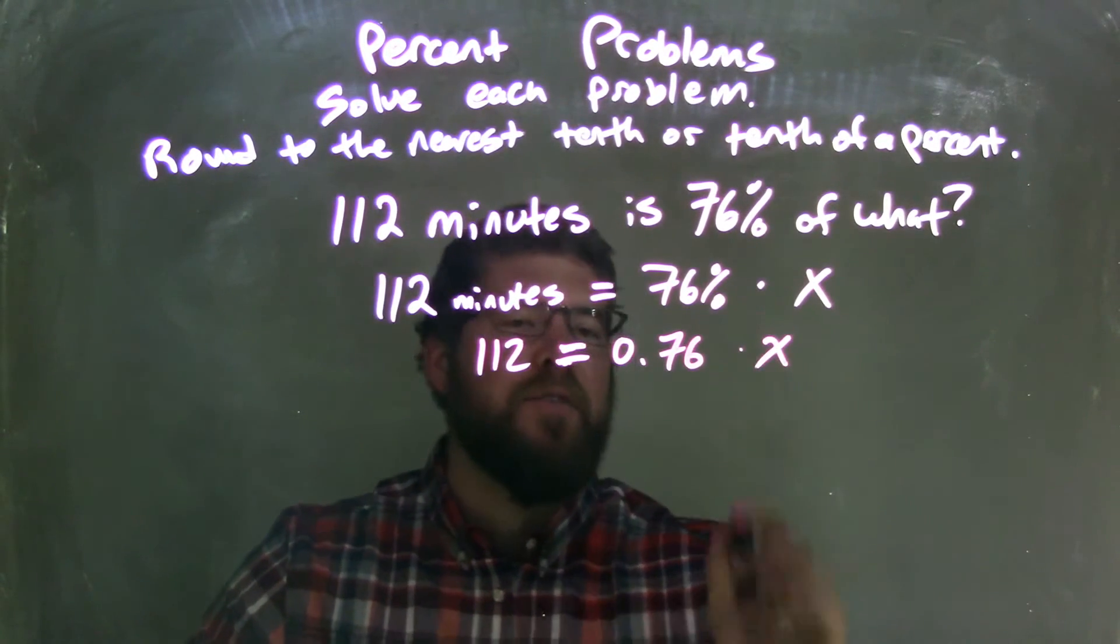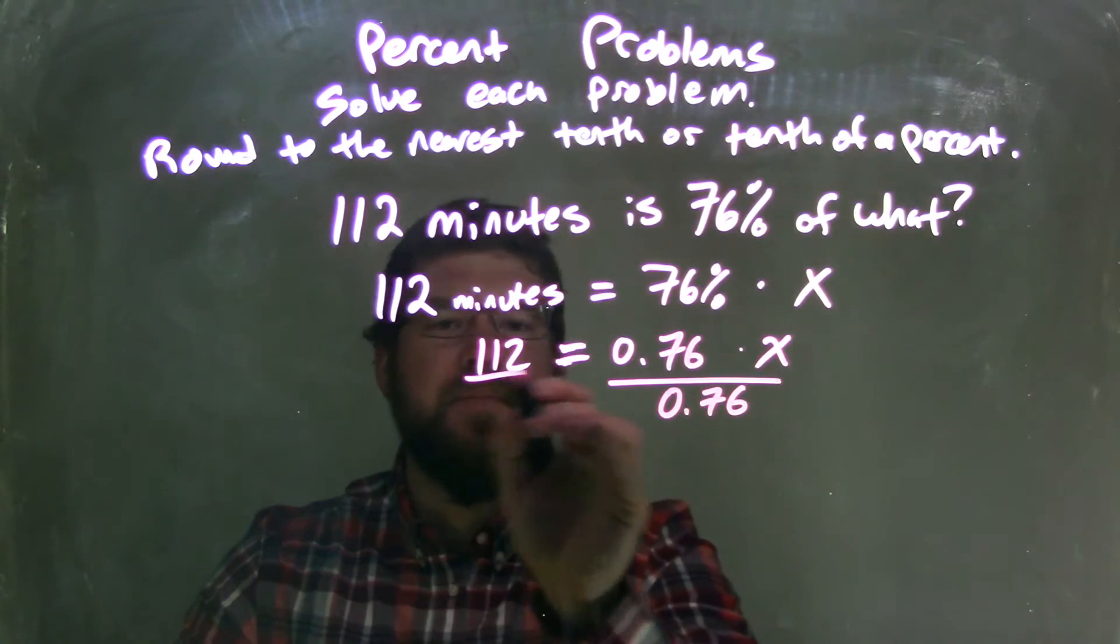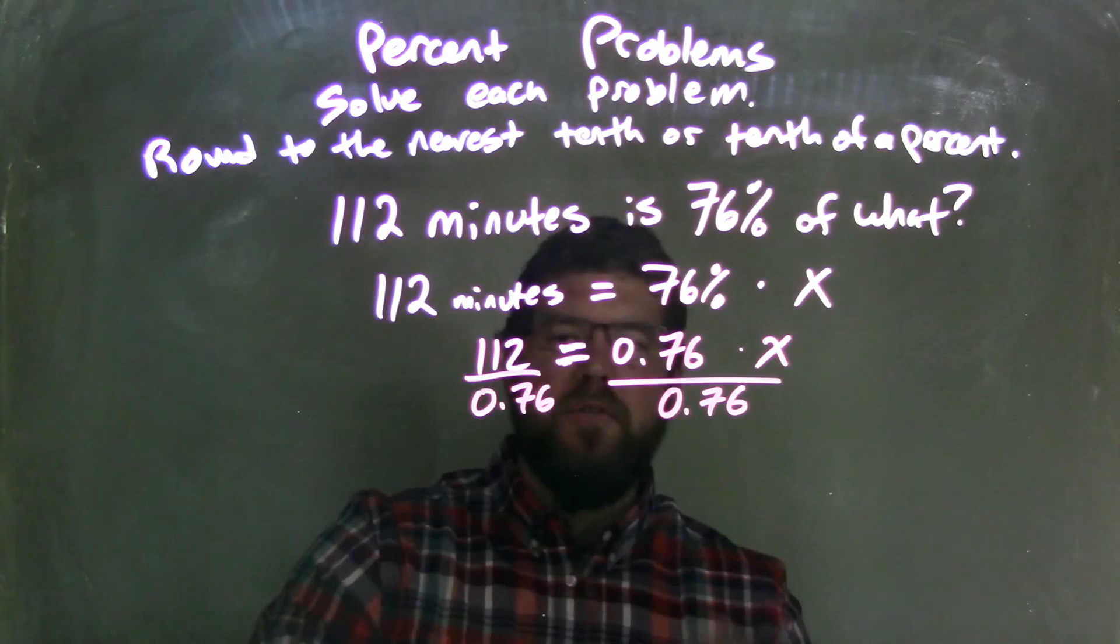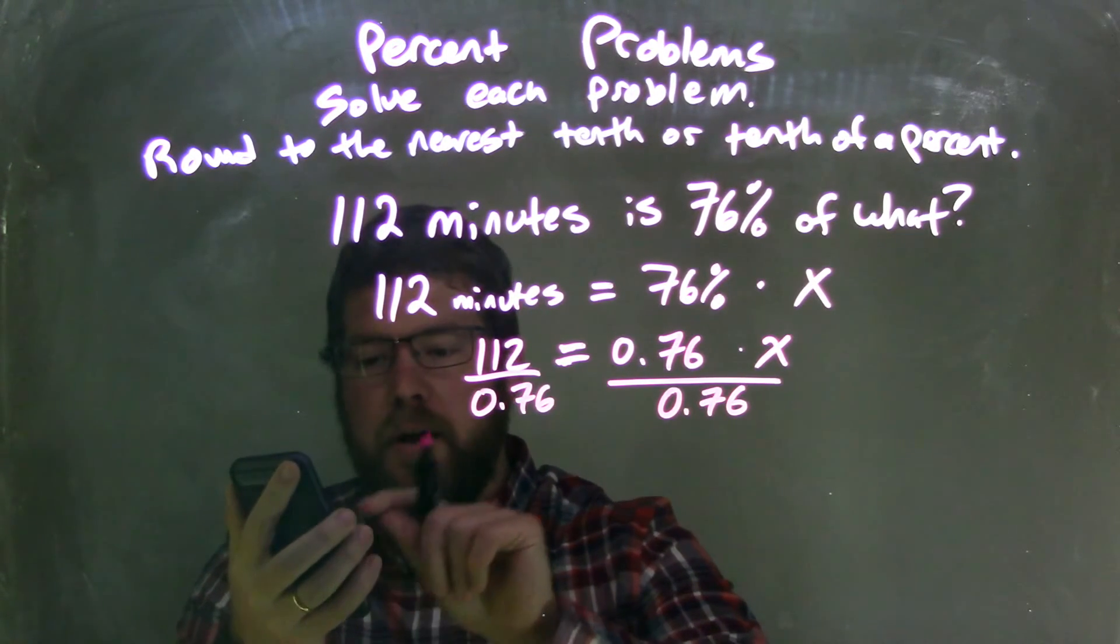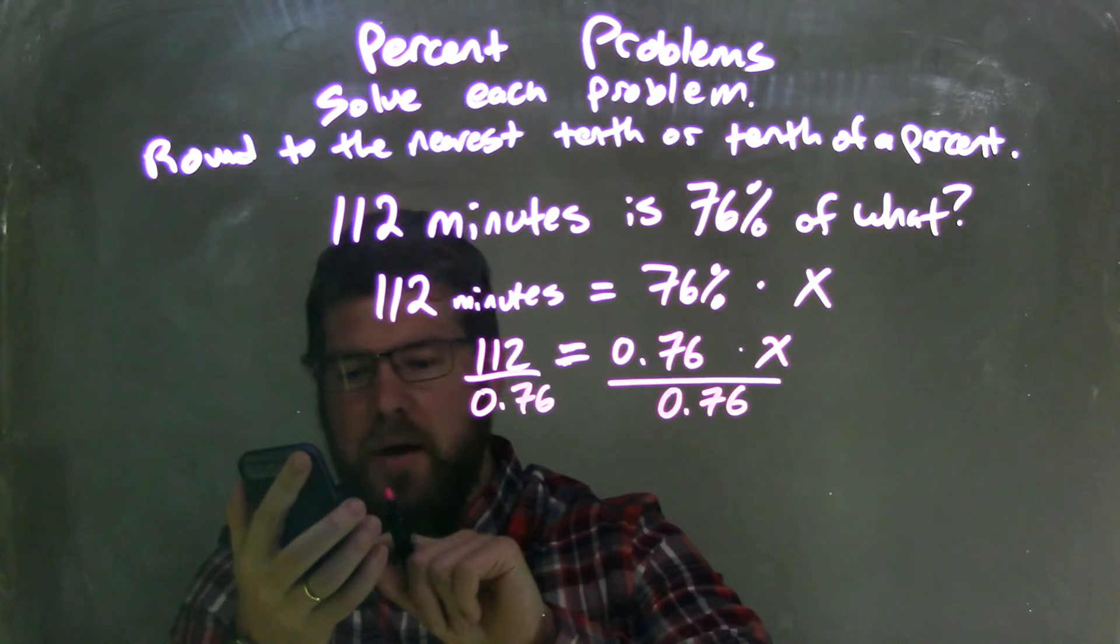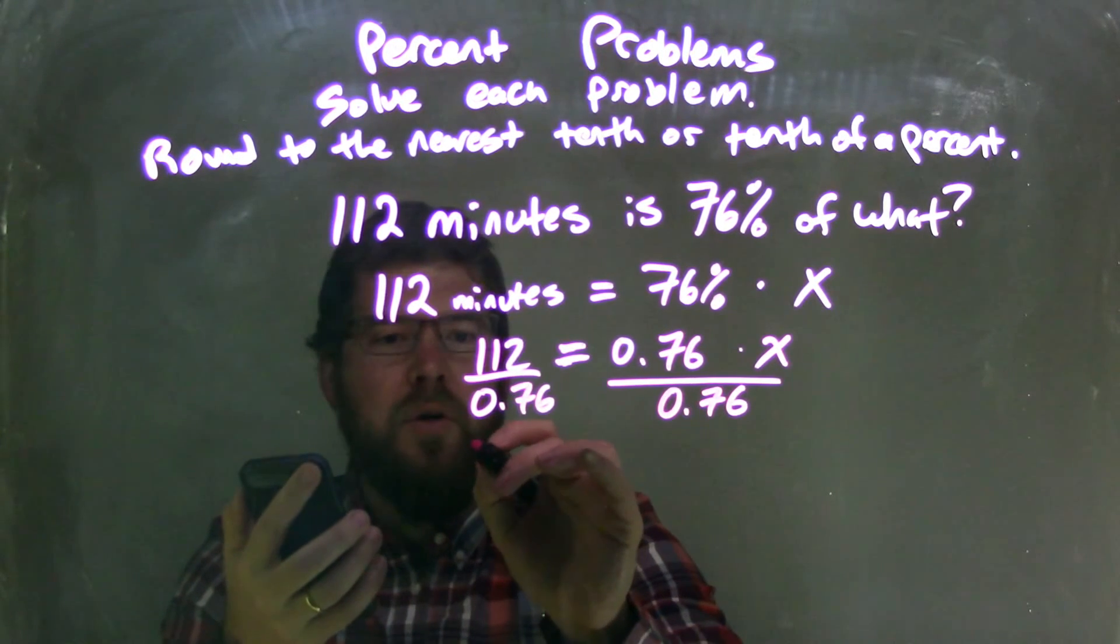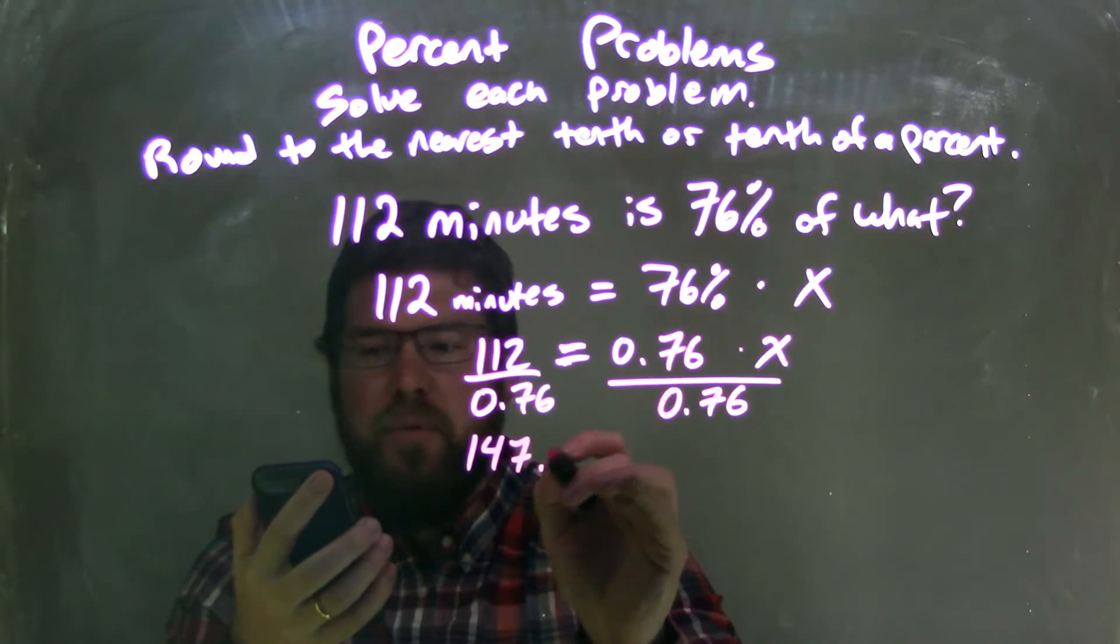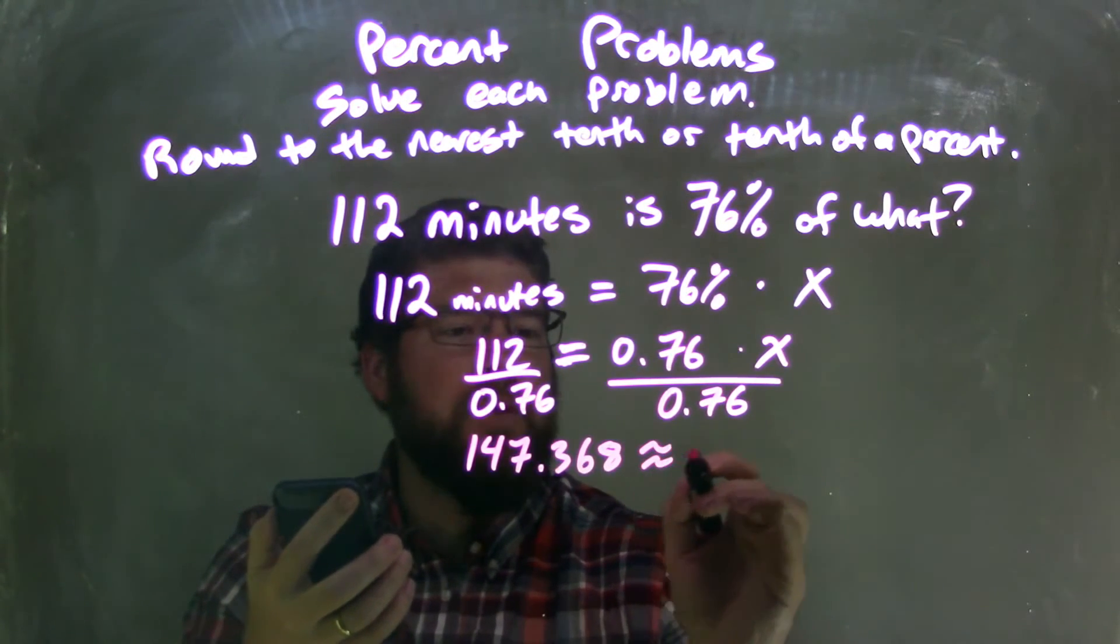Now we need to divide both sides by 0.76. Let's use our calculator here. 112 divided by 0.76 comes out to be 147.368, approximately equals x. I rounded that.